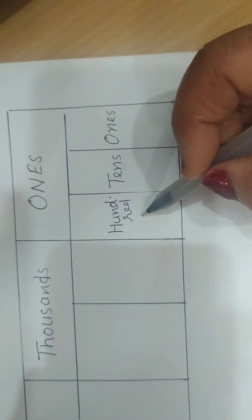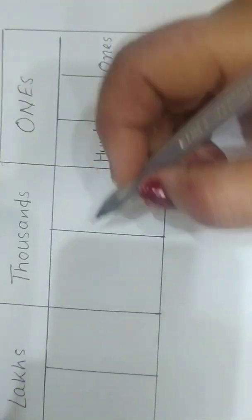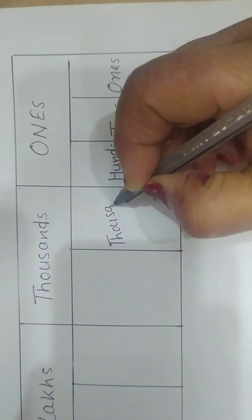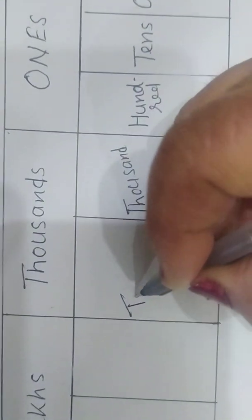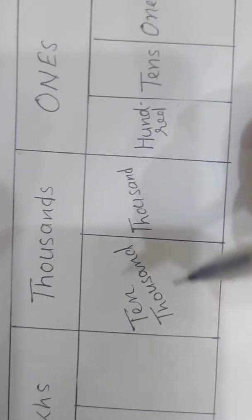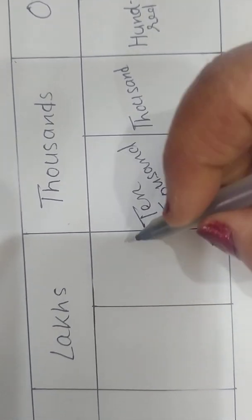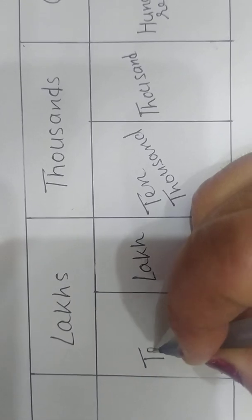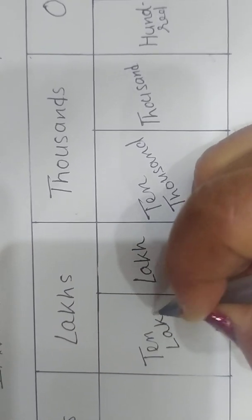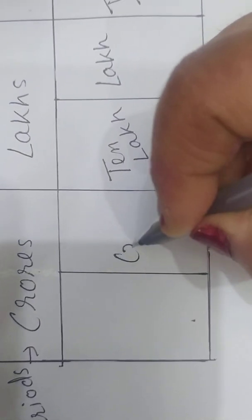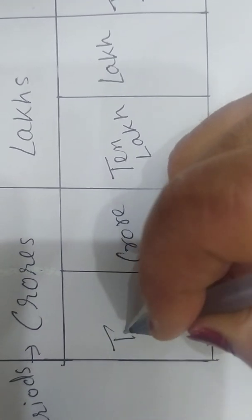The thousands period is divided into two places: thousands and ten thousands. The lakhs period is also divided into two places: lakhs and ten lakhs. The crores period is also divided into two places: crores and ten crores.